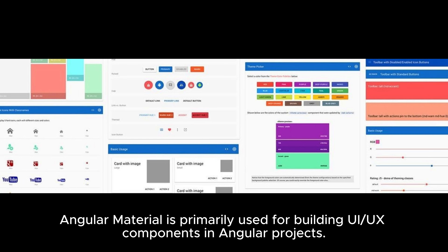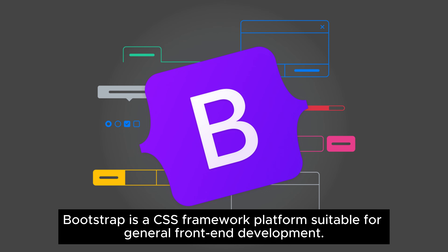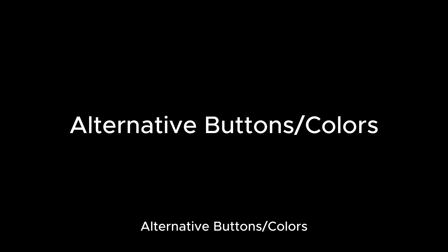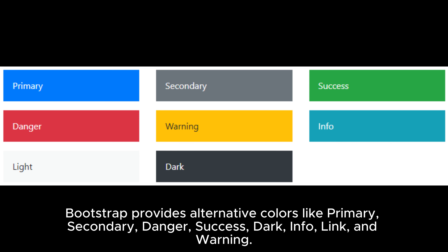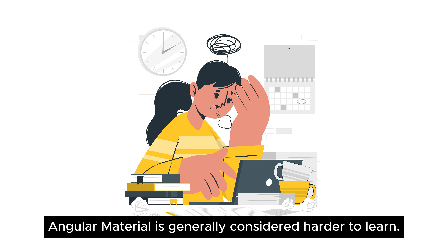For front-end development focus, Angular Material is primarily used for building UI/UX components in Angular projects, while Bootstrap is a CSS framework suitable for general front-end development. Angular Material offers alternative buttons such as primary, warn, accent, link, and disabled. Bootstrap provides alternative colors like primary, secondary, danger, success, dark, info, link, and warning.